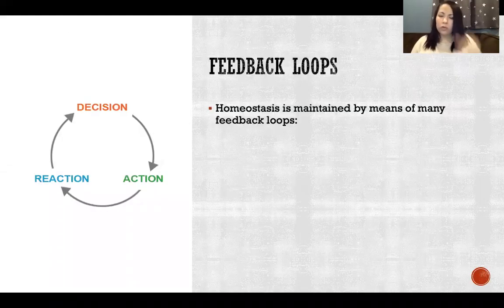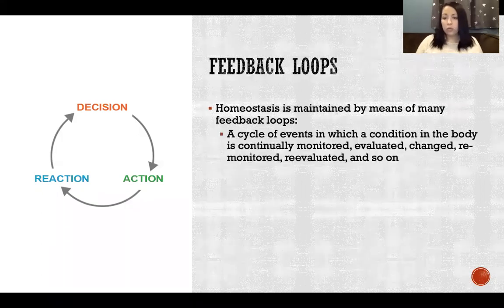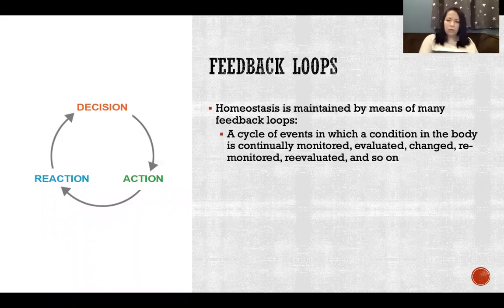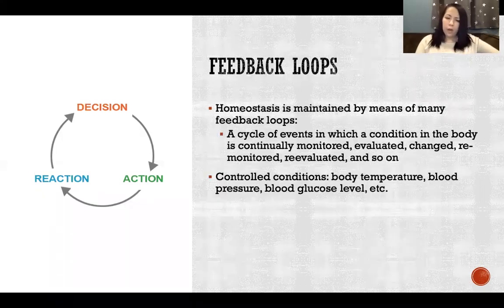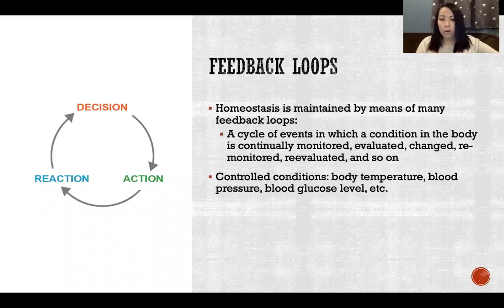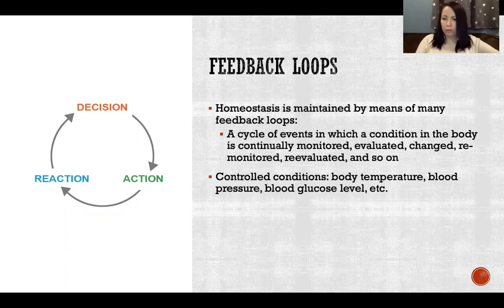We control homeostasis using feedback loops. Homeostasis is maintained using mostly negative feedback loops — a cycle of events in which a condition in the body is continually monitored, evaluated, changed, re-monitored, re-evaluated, and so on. It just keeps going on and on. This applies to things like body temperature, blood pressure, blood glucose level, and many, many other things in the body that we are constantly controlling and monitoring to stay within our homeostatic range.